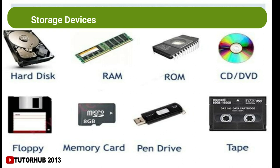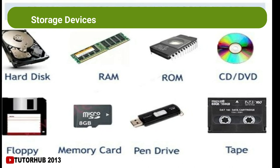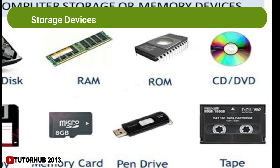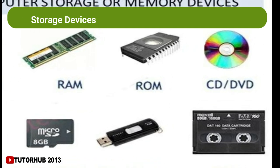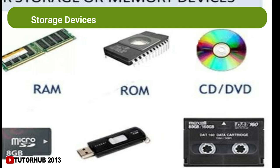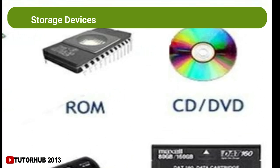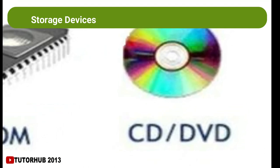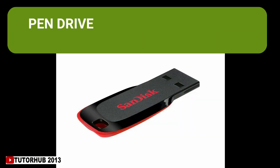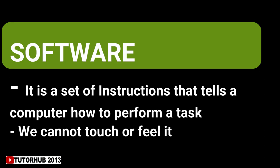Common storage devices include the Compact Disc (CD), the DVD (Digital Versatile Disc), and the pen drive. A CD is a flat circular piece of plastic with a shiny surface — a disc drive is needed to play it. A DVD looks like a CD but can store six times more data than a CD, and also requires a DVD drive. A pen drive is a small storage device that can be inserted into a USB port to read and write data.